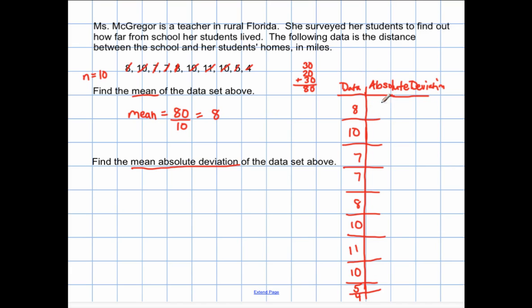Now my job is to figure out how far each data point is from eight. So I could do eight minus the mean eight, which would give me zero, or I can say how far is eight from eight, and it's zero away. Ten minus eight, so always do the data point minus the mean. Ten minus eight would be two, positive two, so it'd be two. Seven minus eight would be a negative one if you did this on the calculator. But again, we're focused on absolute deviation. So how far is seven from eight? One. How far is seven from eight? One.